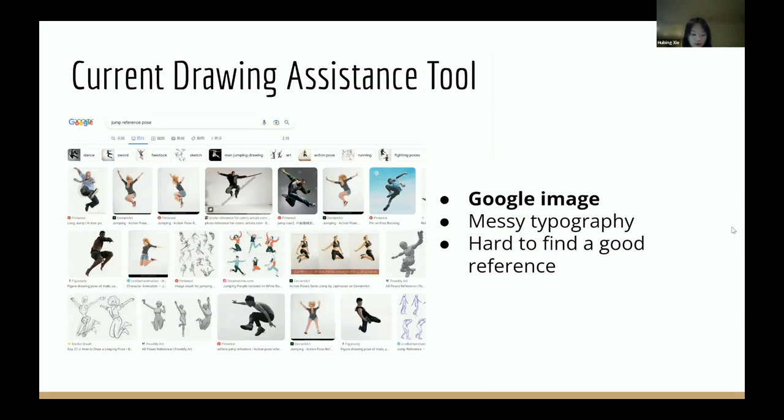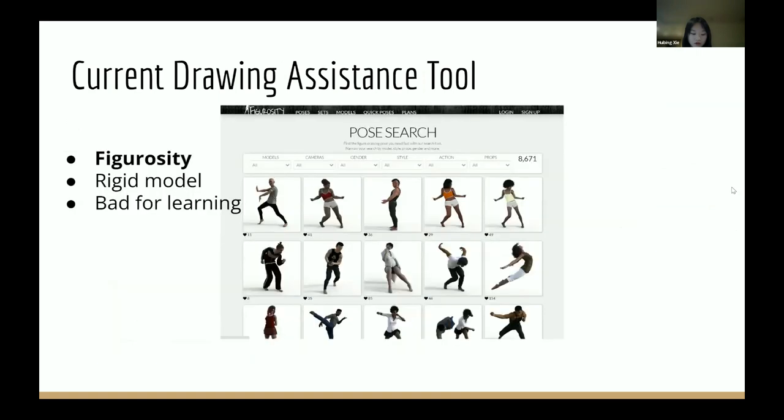For example, searching pictures on Google takes a lot of time and it's hard to find a desirable one. The Figurosity website provides a variety of images. However, these proposals assume the user already has the knowledge of the joints and bones of the human body.